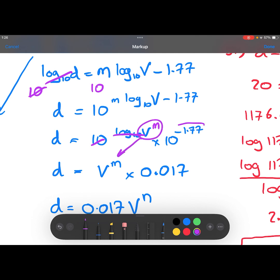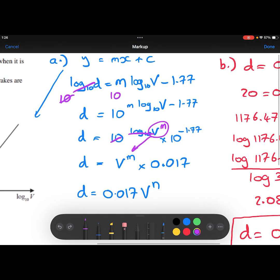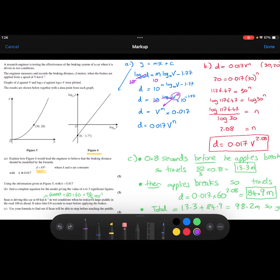The 10 to the power of minus 1.77 on my calculator is 0.017 rounded to two significant figures. And then all I've done is I've taken my answer and I've written it in the form that they want. So I've just swapped these two terms around. And instead of writing the m for the gradient, I've written n because that's what the question wanted. And that's part A done.